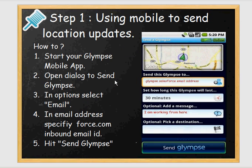For step one, I'm assuming we already have a mobile device with the Glimpse mobile app installed and opened with the required dialogue to send location via email. In the email address field, we specify the Force.com inbound email address. Optionally you can add a message like 'I am working here,' then hit the send button. Glimpse will send an email to the Salesforce inbound email handler, after which we move to the Salesforce org to see Chatter in action.